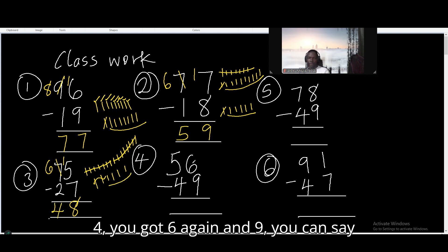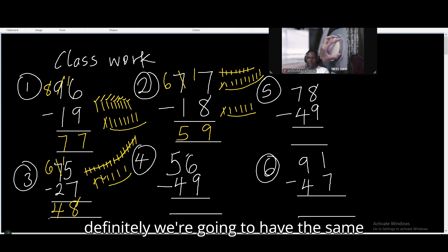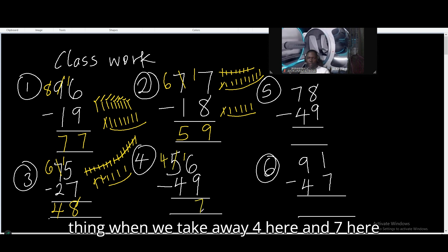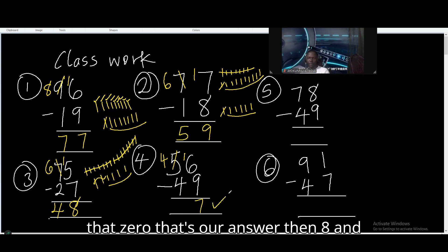And number 4. You got 6 again and 9. You can see 6 and 9. Then you give us 7 here. So definitely we're going to have the same thing when we take away 4 here. You get 7 here. Then 4 minus 4 is 0. So we don't need that 0. That's our answer.